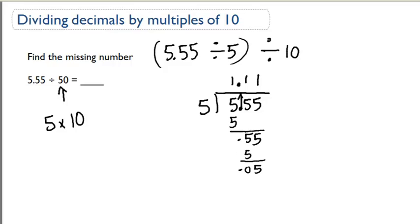Okay, now I got 1.11, all right? So I'm going to do 1.11, I'll write it over here. 1.11 divided by 10. All I have to do is if I'm dividing by 10, I'm going to move the decimal place over one place to the left.